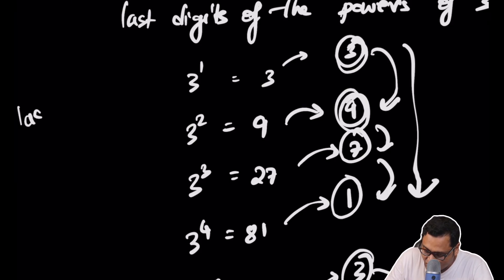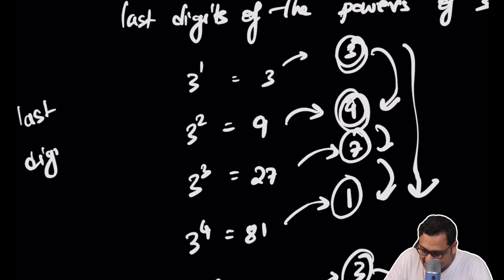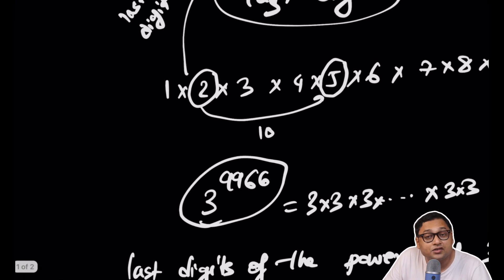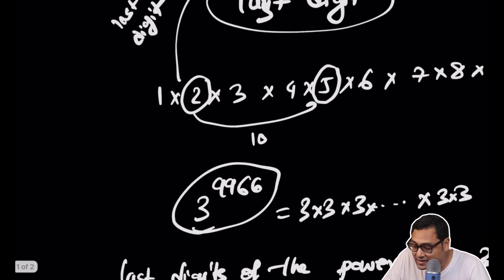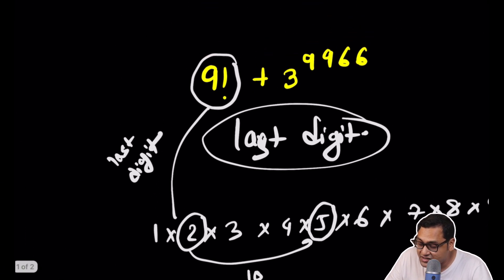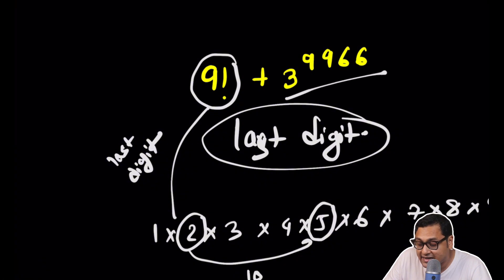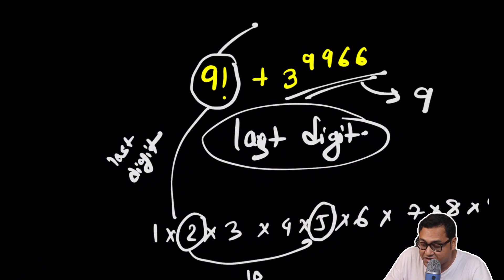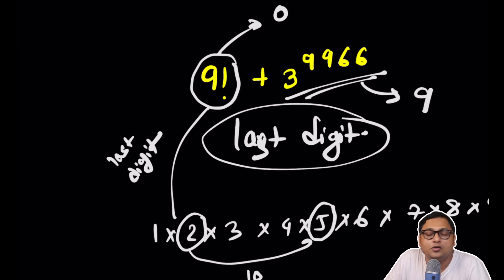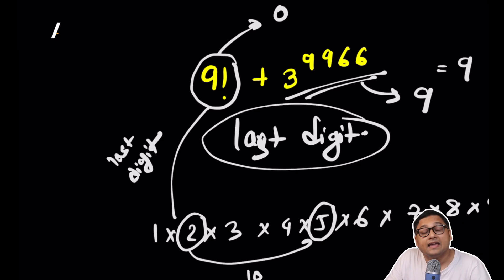So the last digit is 9. The last digit of three to the power 9966 is 9. The last digit of nine factorial is 0. So nine factorial plus three to the power 9966 has last digit 0 plus 9, which equals 9.